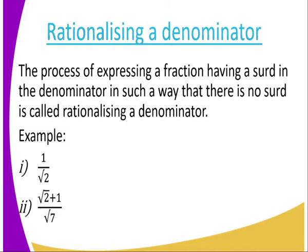Remember we said root two times root two is supposed to be two. Already there is no surd in the denominator — our value is two. The same case, when we operate the second one, after multiplying the numerator and the denominator, you multiply by root seven and root seven, and you are going to get seven as the denominator. So that is the process we are referring to as rationalizing the denominator.